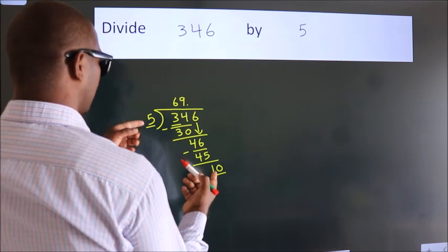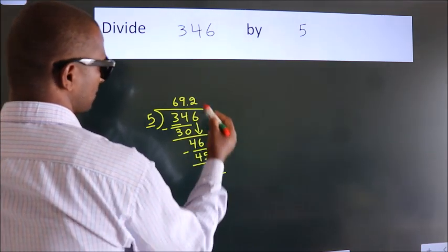When do we get 10 in the 5 table? 5 times 2 equals 10.